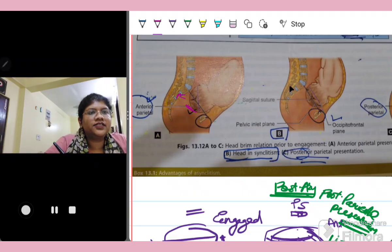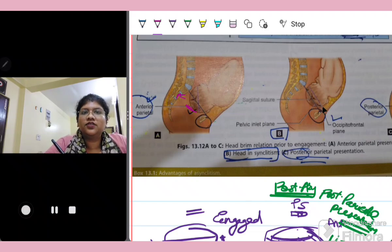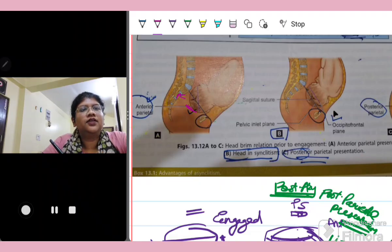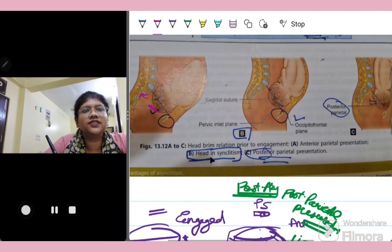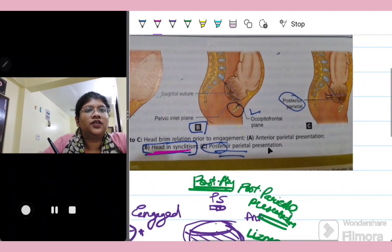This is the ideal situation in which the sagittal suture should lie in between the ischial spines. That is called as head in synclitism.